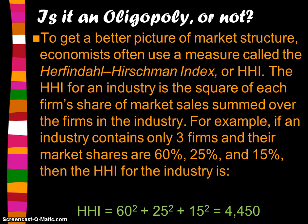To decide if a firm is oligopolistic, economists use a measure called the Herfindahl-Hirschman Index, or the HHI. The HHI of an industry is the square of each firm's share of market sales summed over the firms in the industry. For example, if an industry contains only three firms with market shares of 60%, 25%, and 15%, then the HHI is 60 squared plus 25 squared plus 15 squared, which equals 4,450.